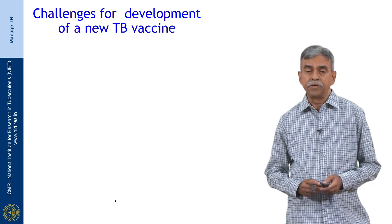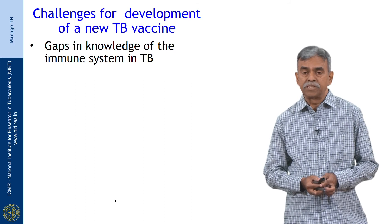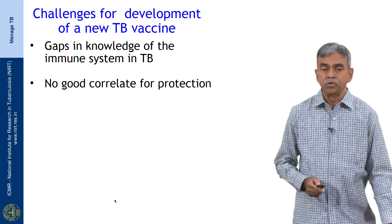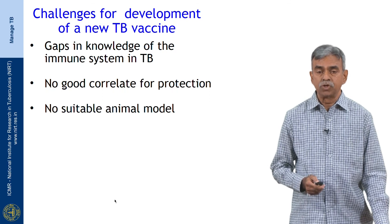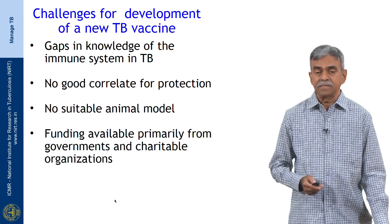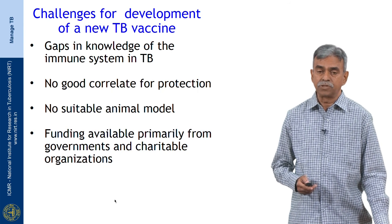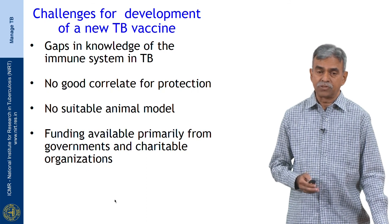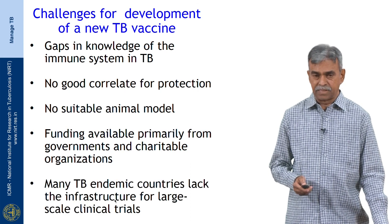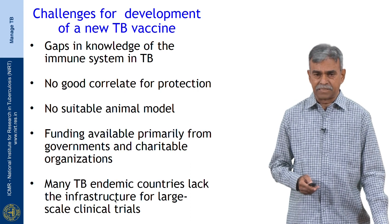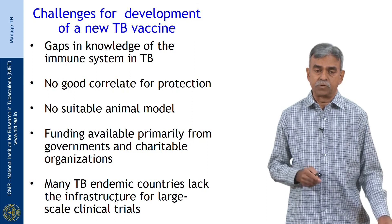What are the challenges for developing new TB vaccines? There are gaps in our knowledge of the immune response in TB; there is no good correlate of protection — we do not know what really constitutes protection in tuberculosis — and there is no suitable animal model. Funding is difficult: only governments and charitable organizations are willing to fund TB vaccines because there is no commercial market, and industry is reluctant to invest. Many TB-endemic countries also lack the infrastructure to carry out the large clinical trials necessary to test TB vaccines.